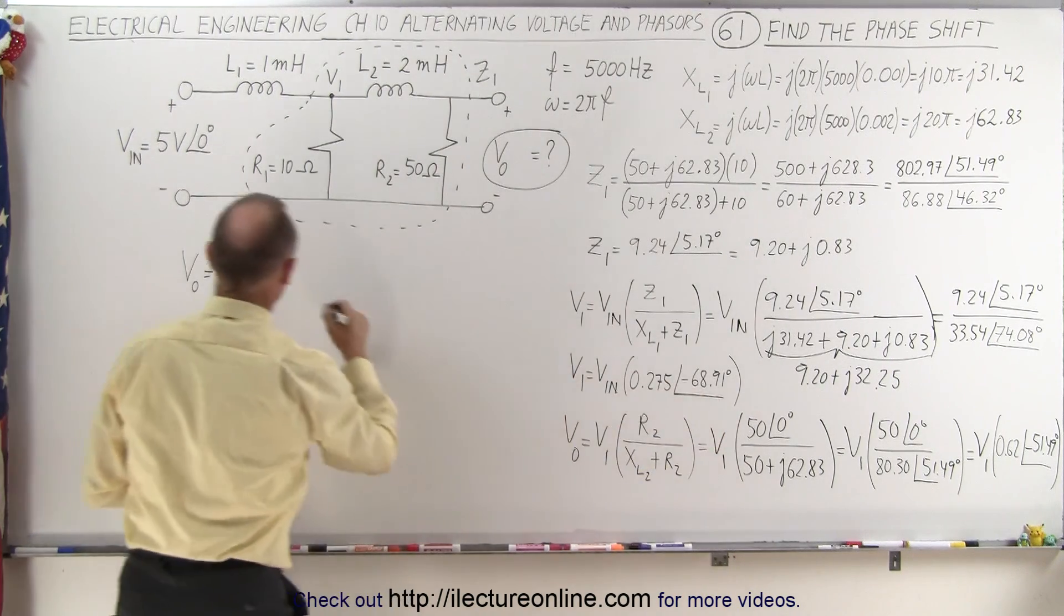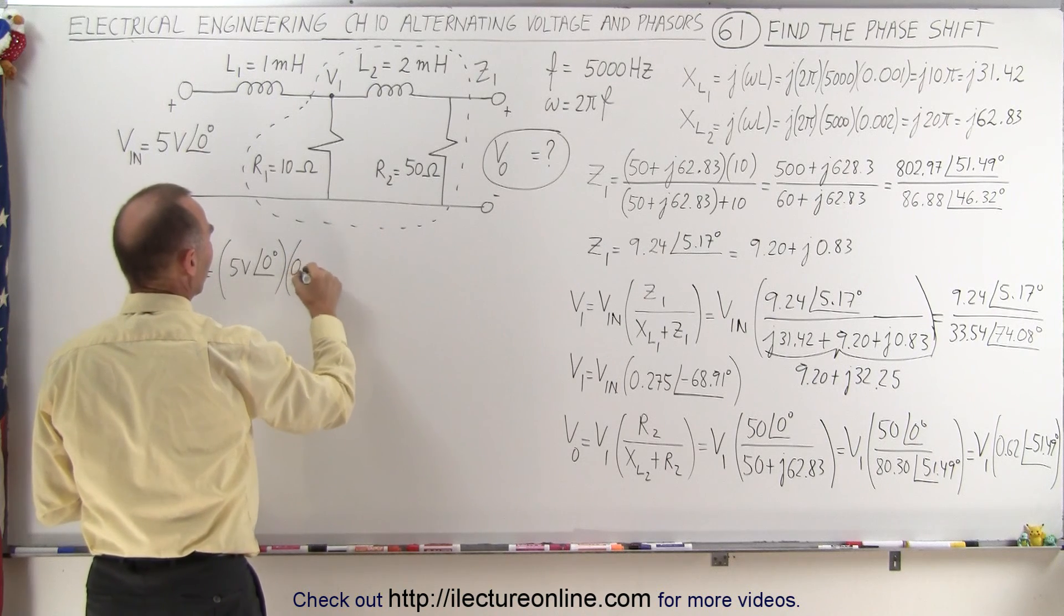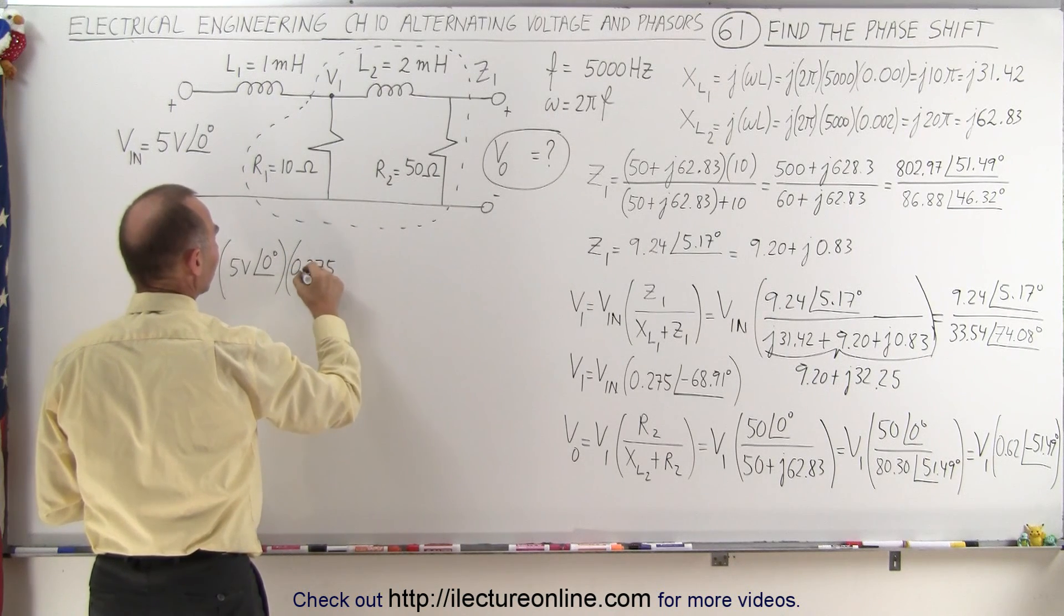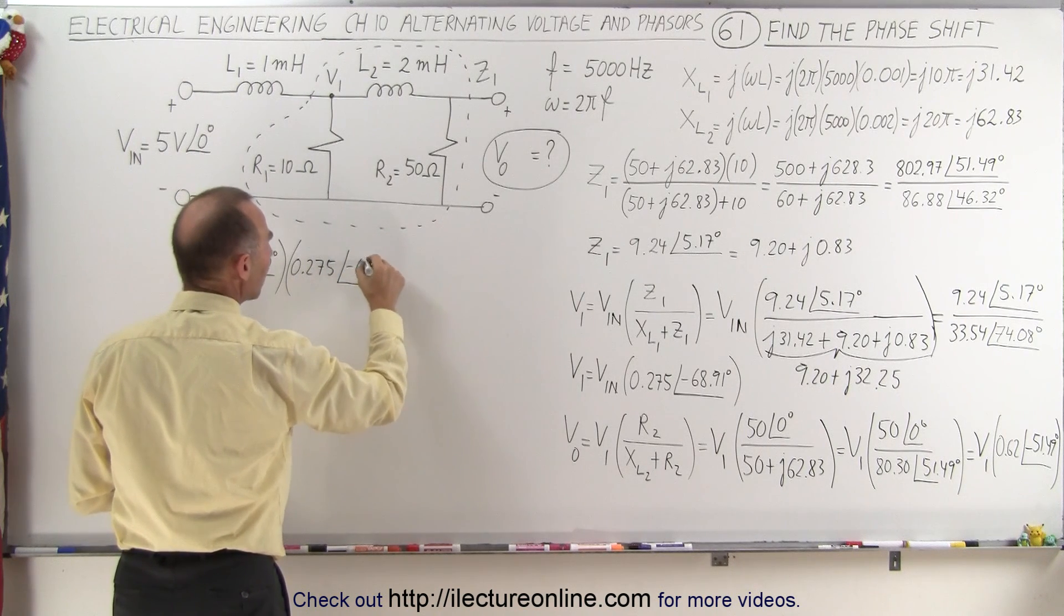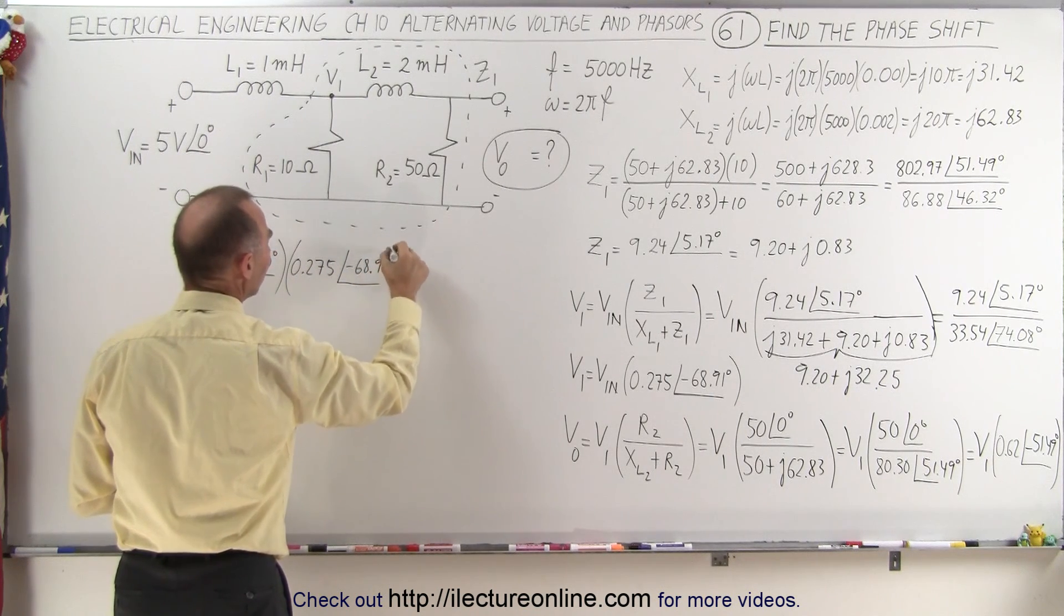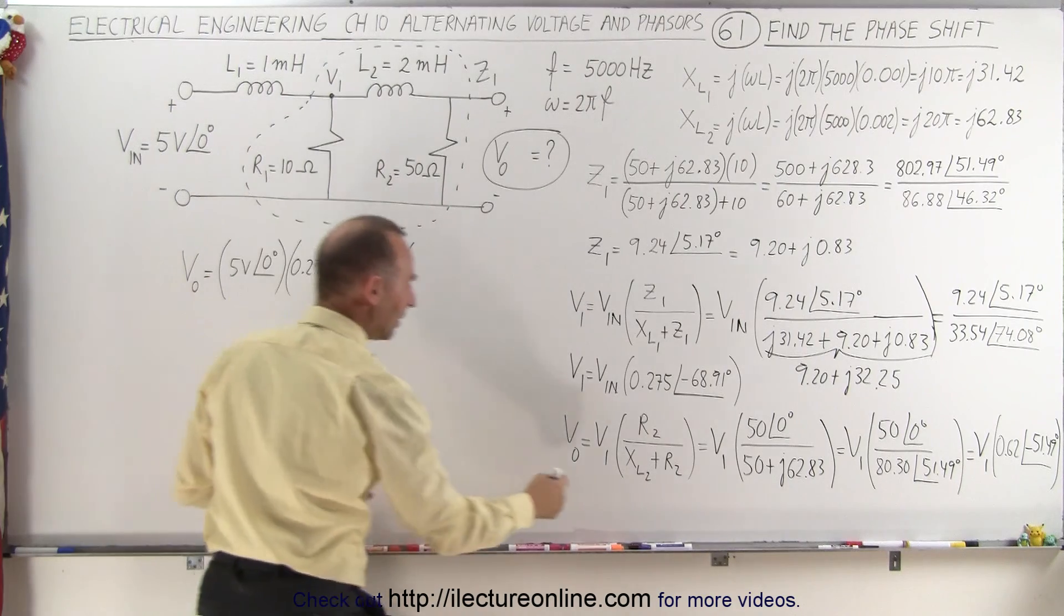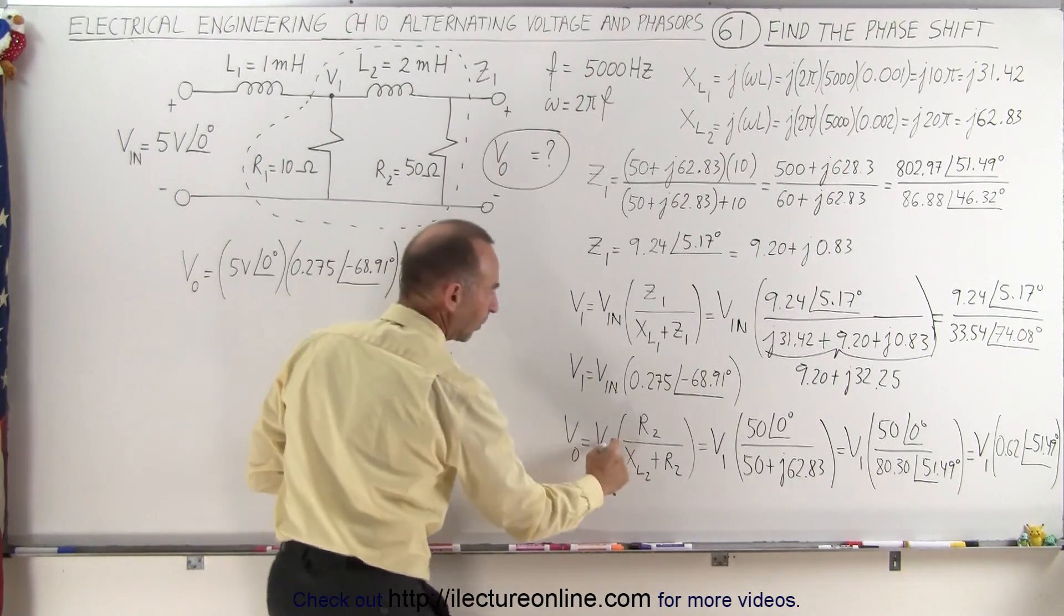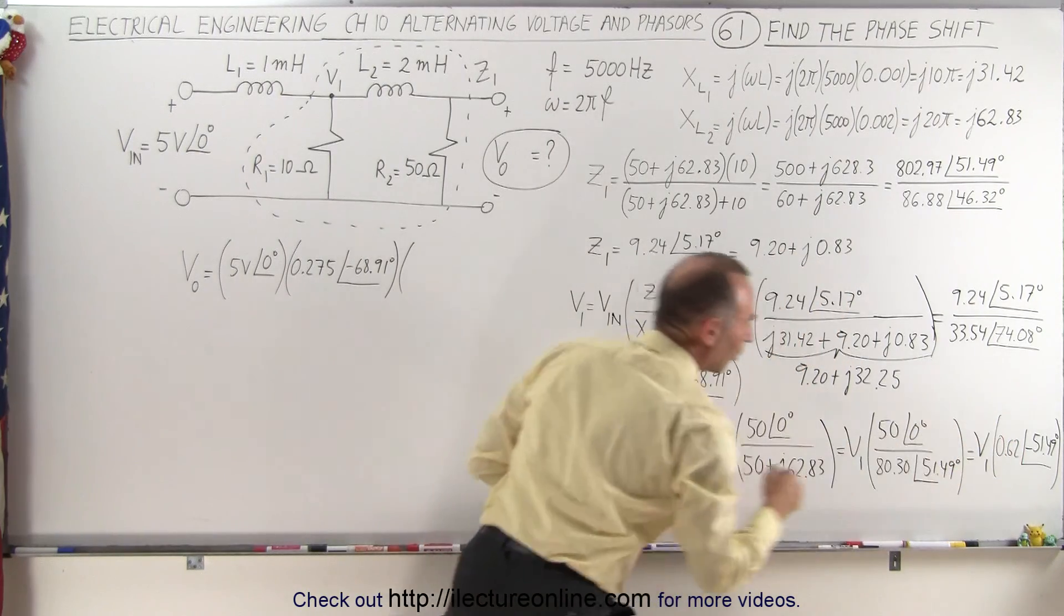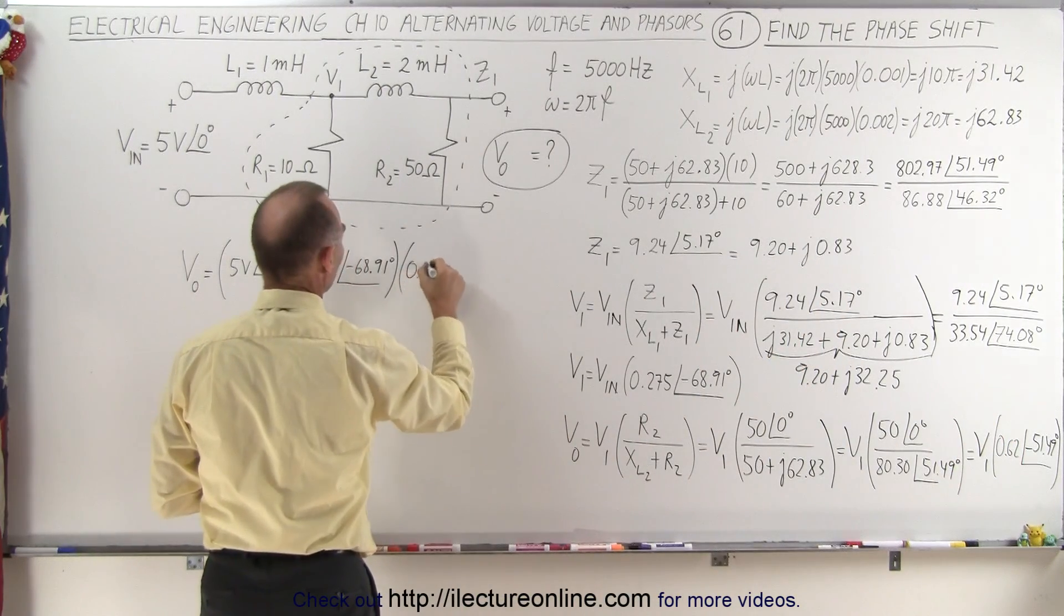We multiply that times this, which is 0.275 with an angle of minus 68.91 degrees. Now we have V1, which is simply the product of those two, multiply times this portion, which is 0.62 with a phase angle of minus 51.49 degrees.